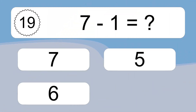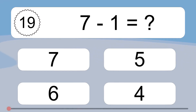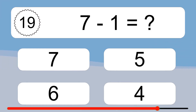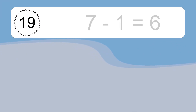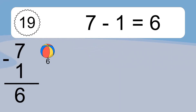7 minus 1 equals what? 7 minus 1 equals 6. Let's count it. 6.